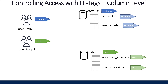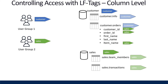Let's look at an example of LF tags at a column level. Using user group one and user group two, in our customer.orders table we have five columns: customer ID, order ID, first name, last name, and item name. We want user group two to have access to customer ID, order ID, and item name, but we want to protect customer names. Because LF tags support column-level tagging, we assign the sales tag to customer ID, order ID, and item name. When user group two queries this table using something like AWS Athena, they will only see those three columns and will not have access to first name or last name data. This lets us control access through permissions rather than building data pipelines to move the orders table to another location in our data lake.